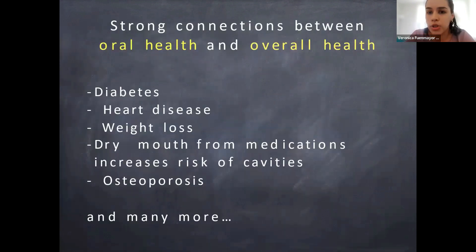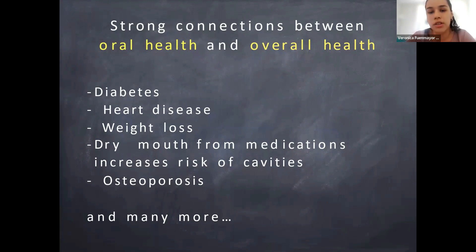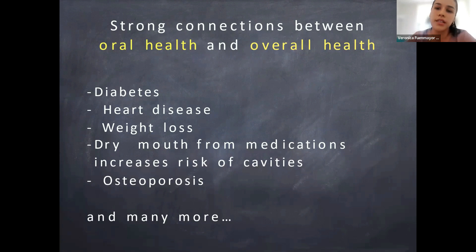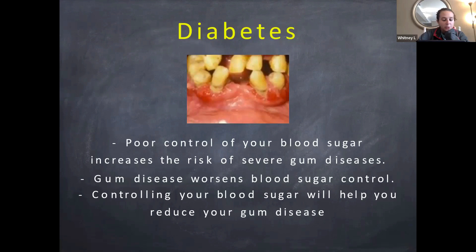Based on research, there are strong connections between oral health and overall health. Your oral health can contribute to various diseases and conditions, and some conditions can also affect your oral health. These include diabetes, heart disease, weight loss, dry mouth from medications — which increases the risk of cavities — and osteoporosis. Poor control of blood sugar increases the risk of severe gum disease, and gum disease also worsens blood sugar control. Controlling your blood sugar will help reduce gum disease.